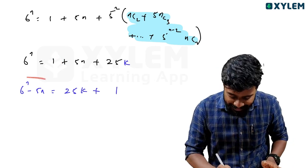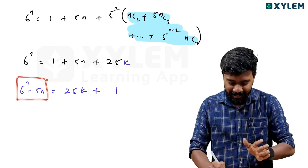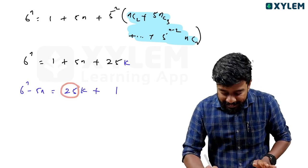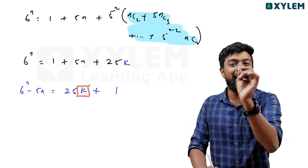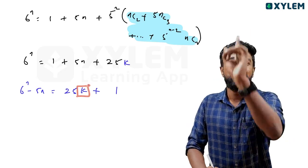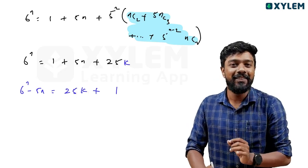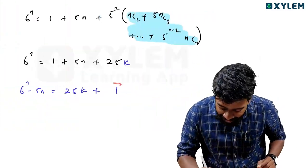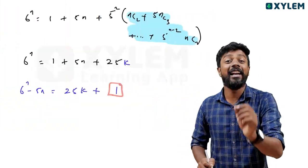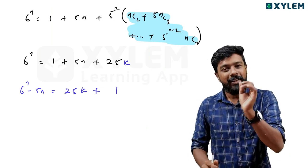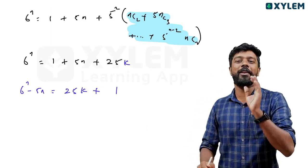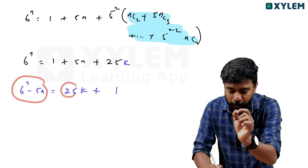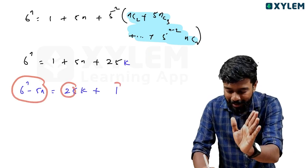So 6 raised to n minus 5n, when divided by 25, we get 1 as the remainder. This proves the first result.